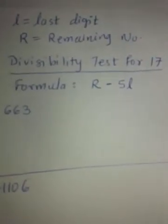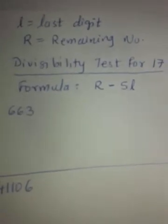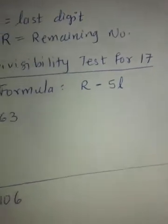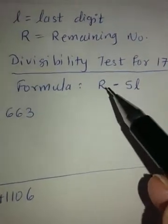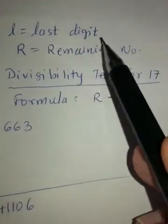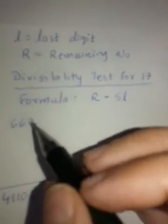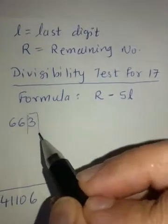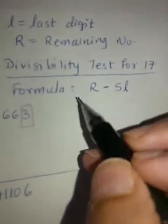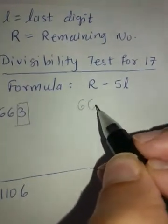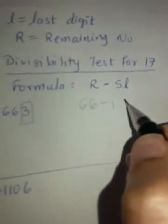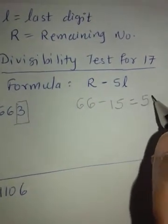Today we are going to first cover divisibility test for 17 and the formula is R-5L. If you remember from Part 2, R is remaining number and L is last digit. So let's understand this test. Last digit is 3, remaining number is 66. So let's put this in our formula. R is 66, remaining number, minus 5L, 5 times 3 is 15, which comes out to 51.